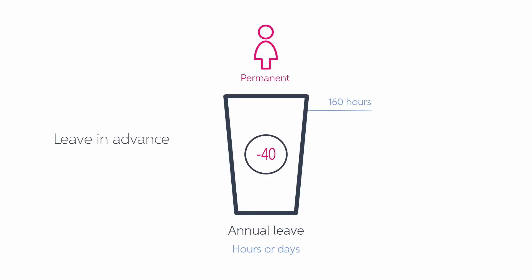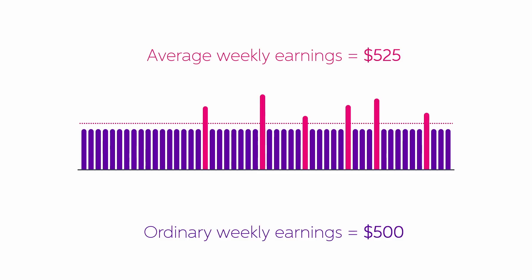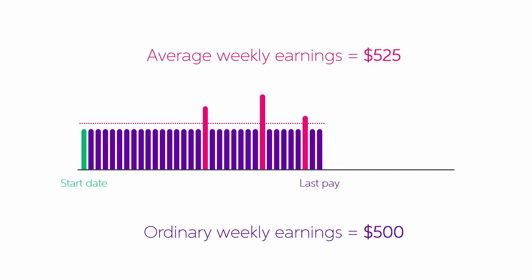Sometimes you may want to let an employee take leave before they're entitled to it — this is called leave in advance. This most commonly happens in their first 12 months of employment, before they have a leave balance. When an employee takes leave in advance, they usually go into a negative balance, which is deducted from the 4 weeks of leave they become entitled to at their anniversary date. It's a good idea to set out how much leave can be taken in advance in your employment agreement, and to have your employee agree in writing that any overpayment of annual leave can be deducted from their final pay. Without this clause, you usually can't deduct negative leave from a final pay. The leave rate is calculated the same as normal — the greater of ordinary weekly earnings or average weekly earnings. If you don't have a full 52 weeks of earnings, use the number of weeks from the employee's start date until the end of the last pay period.